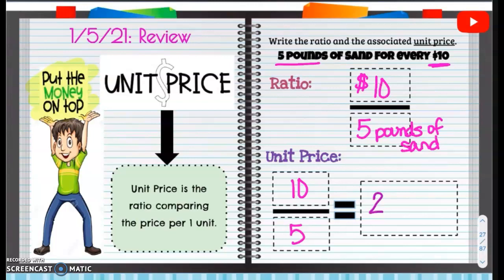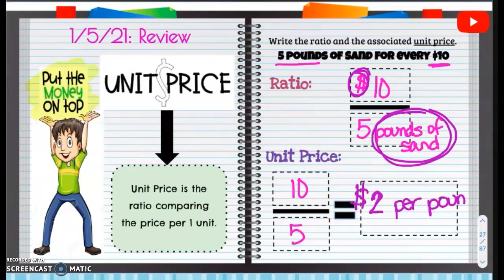Now, two what? Remember, it's a unit price. So it's going to be two. And then we're going to take this part first, and then this part second. So $2 per pound of sand.